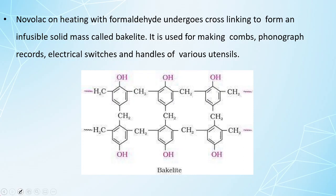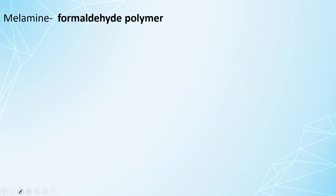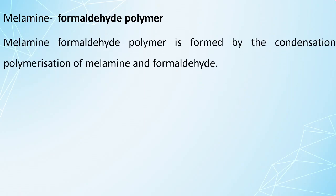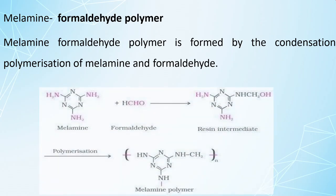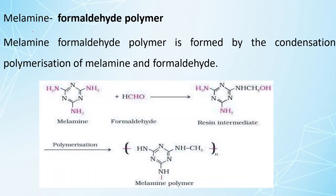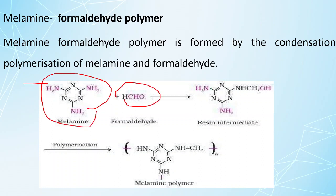Melamine formaldehyde polymer is formed by condensation of melamine with formaldehyde through polymerization. This melamine polymer is used in the manufacture of unbreakable crockery — items that do not break when dropped.